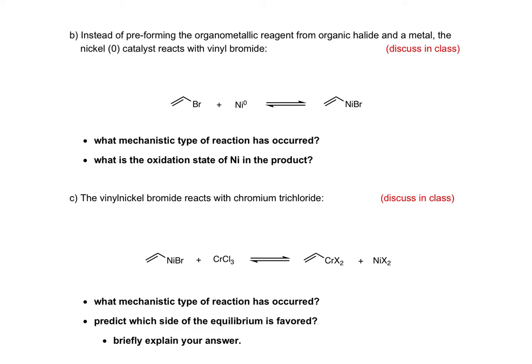Once the organonicel bromide is generated, this then reacts with chromium trichloride to generate an organochromium dichloride intermediate and nickel dihalide as a mixture of bromine and chlorine. In class, we'll review which mechanism is occurring here and make a prediction as to which side of the equilibrium may be favored.